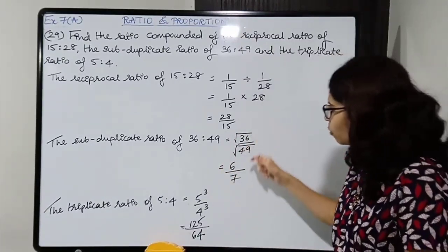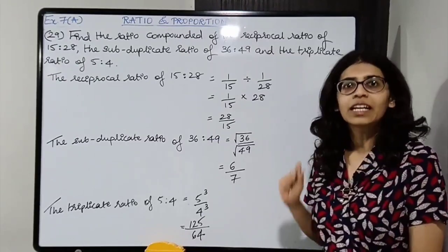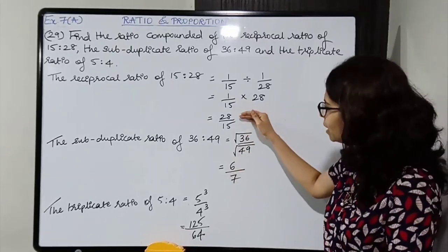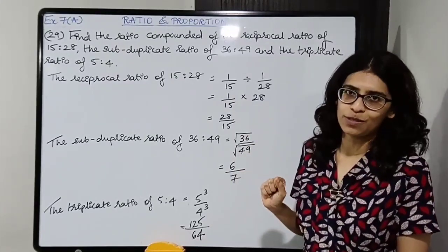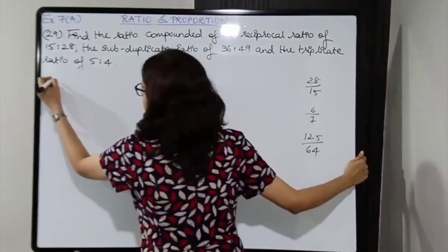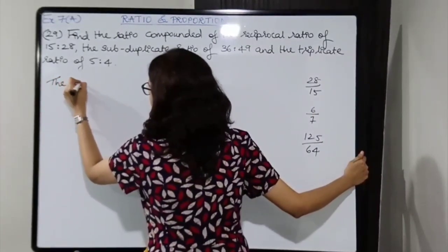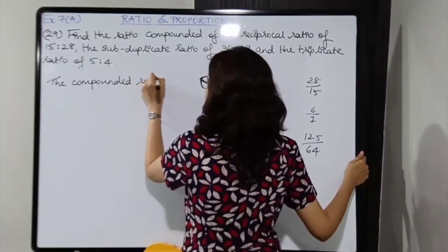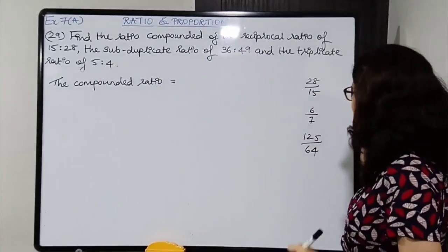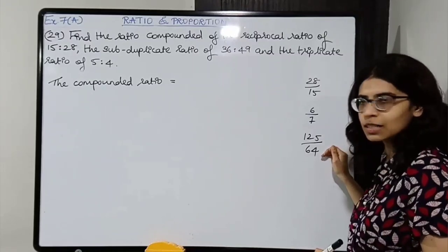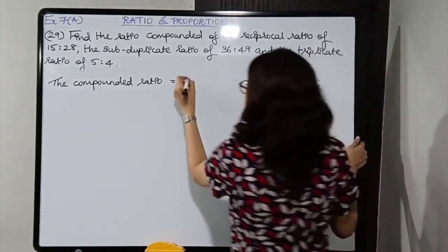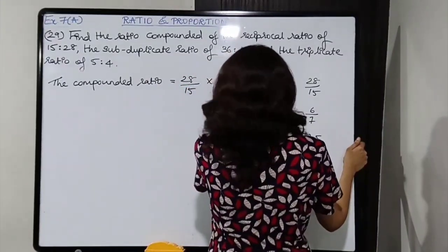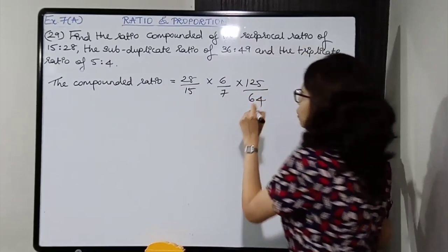Let's solve the next question — question number 30. There are two parts. Part A: if R squared is equal to PQ, show that P is to Q is the duplicate ratio of P plus R is to Q plus R.